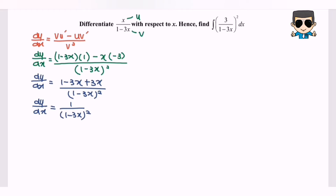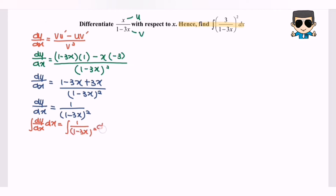So here we have the result for the first derivative. By referring to the question — hence, find the integral — we are going to relate the situation. Kindly refer to the left hand side: if we integrate dy/dx with respect to x, we also need to integrate the right hand side, which is 1 over 1 minus 3x to the power of 2, with respect to x.